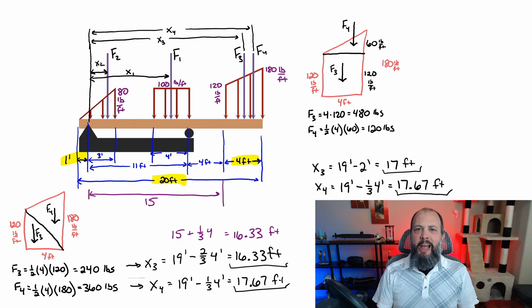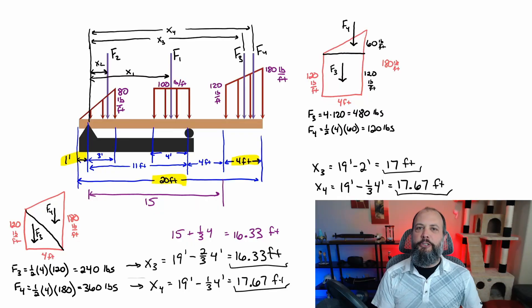It may seem odd right now that you're getting to different answers. You have different forces and different distances based on which method you choose, the rectangle triangle or the two-triangle method. But both of these methods are correct. And later, when you get to rigid body equilibrium, you'll see that they both will result in the same reaction forces.